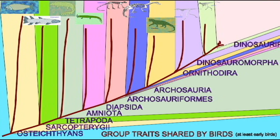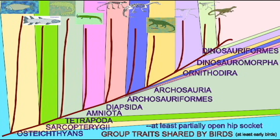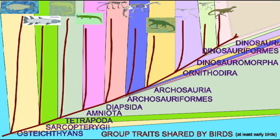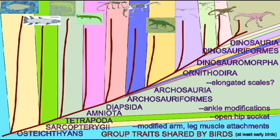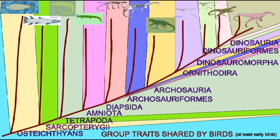This would be important in the evolution of birds later, because once the early dinosaurs were bipedal, their hands were no longer required to support the body's weight and be used in locomotion, and the ancestors of birds would then modify these arms for a new function.